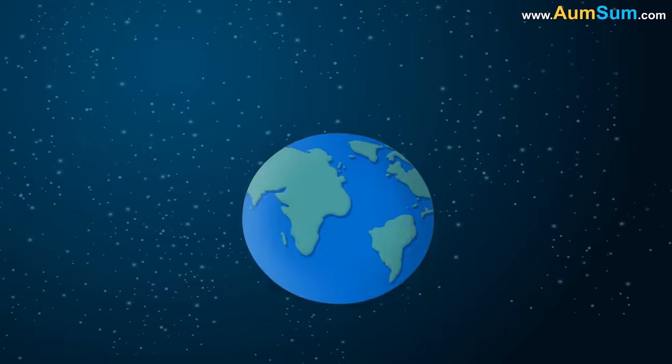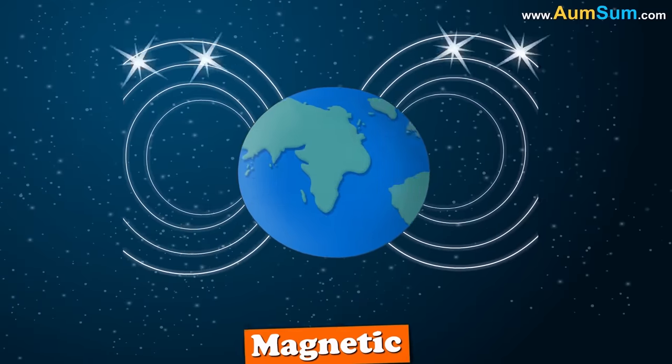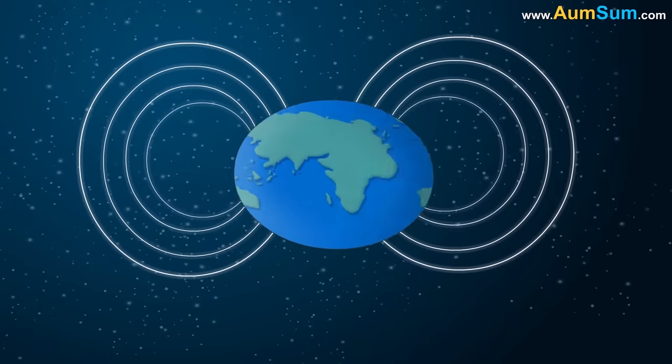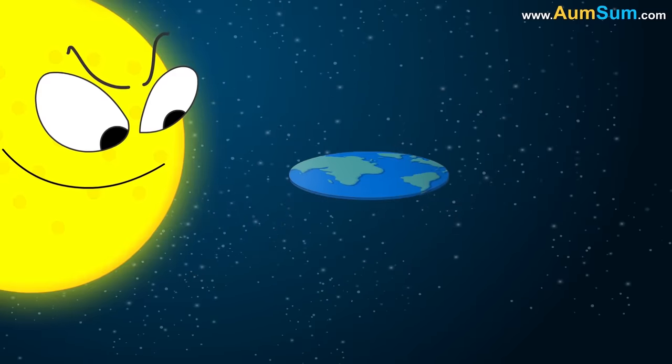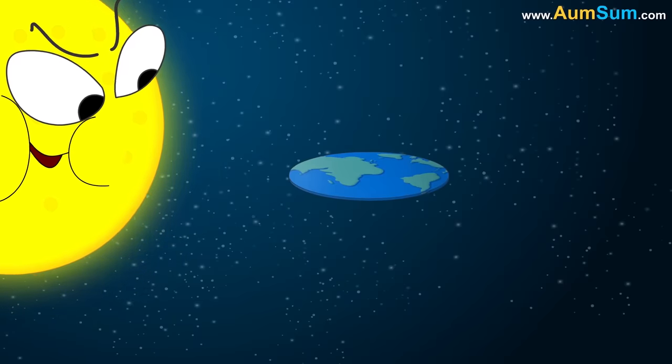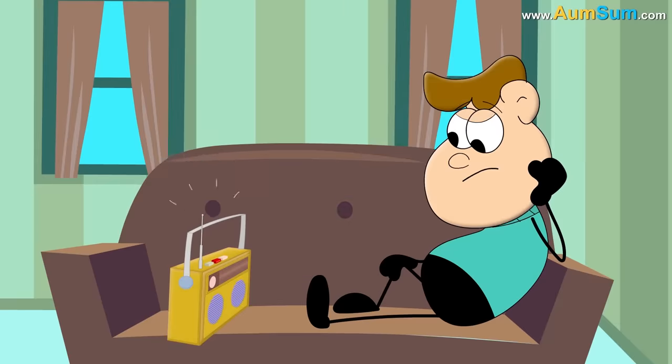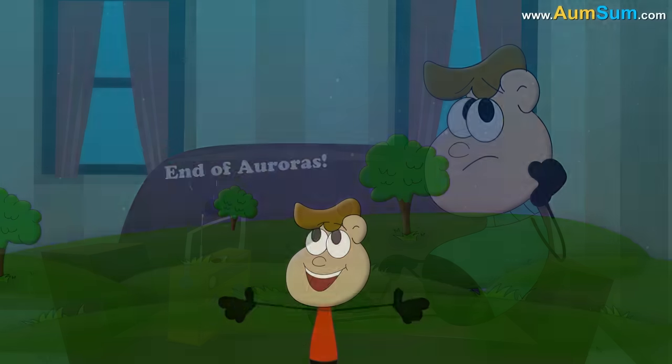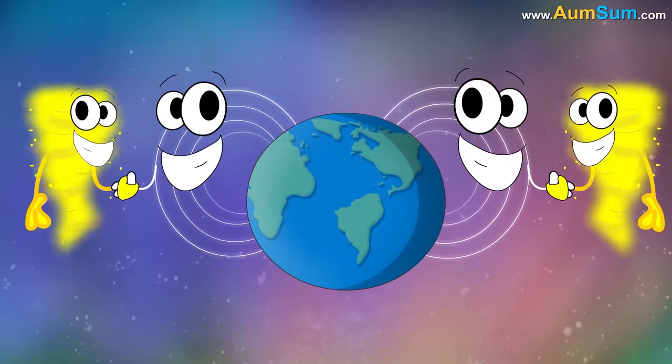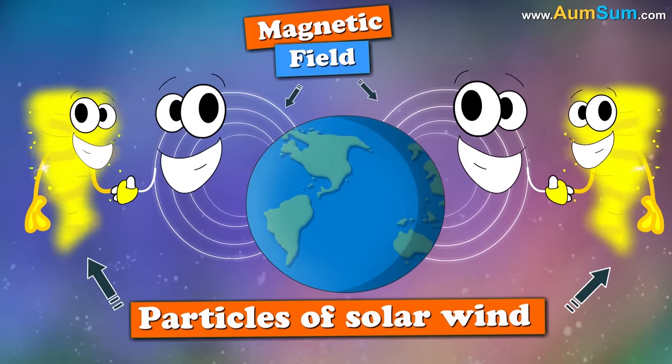Secondly, it is believed that rotation of Earth generates its magnetic field. Without rotation, there would be no magnetic field to protect us from the harmful solar winds. Also, it would mean an end to the world famous lights called auroras as they are formed due to the interaction between Earth's magnetic field and particles of solar wind.